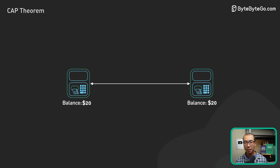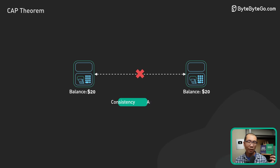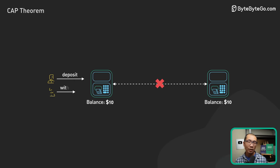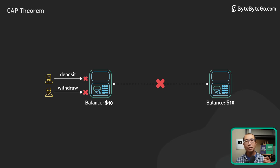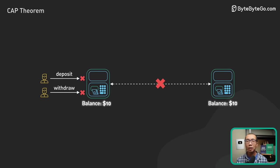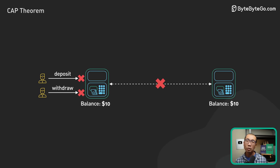If there is a network partition and the ATMs are unable to communicate with each other, the system must choose between consistency and availability. If the bank prioritizes consistency, the ATM may refuse to process deposits or withdrawals until the partition is resolved. This ensures that the balance remains consistent, but the system is unavailable to customers.